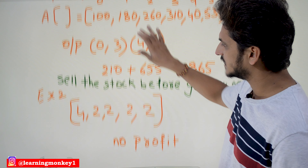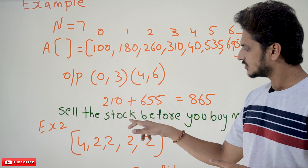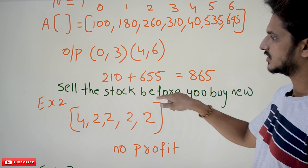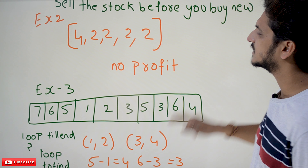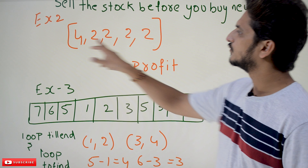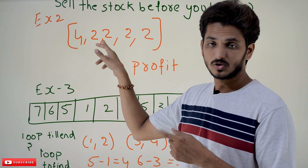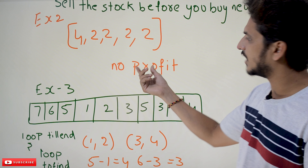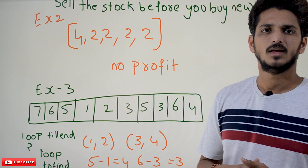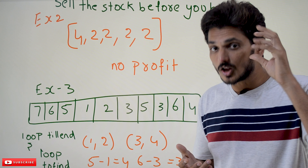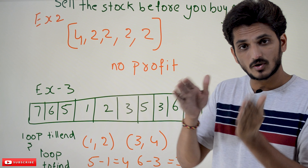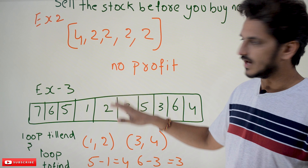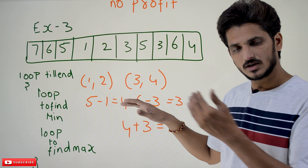You could sell earlier, but since the next day is higher, don't sell — wait for the maximum. Sell at the peak to get the maximum segment profit. Also note the condition: sell the stock before you buy a new one. For Example 2, with array [4,2,2,2,2], every next day is less or equal, so there is no profit — the algorithm should display 'no profit'.